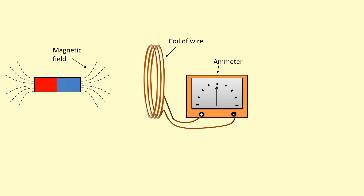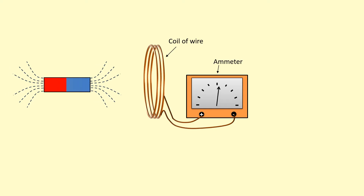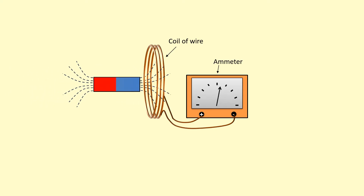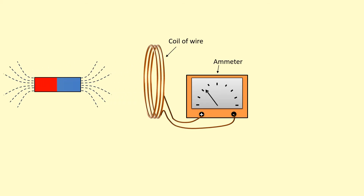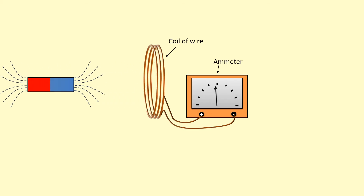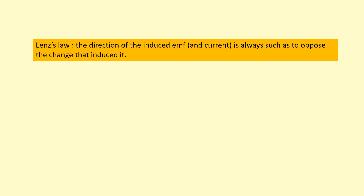Now I'm going to move this magnet close to the coil — watch how there's going to be a positive reading on the ammeter. This is because of Faraday's Law. Now watch what happens when I move the magnet away — hopefully you can see there's a negative reading on the ammeter. This can be explained using Lenz's Law.